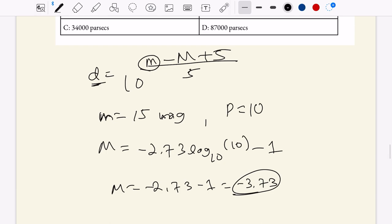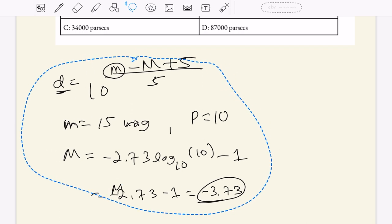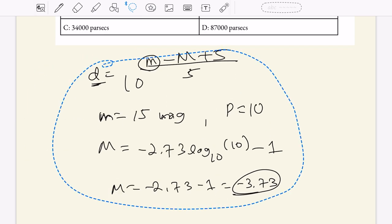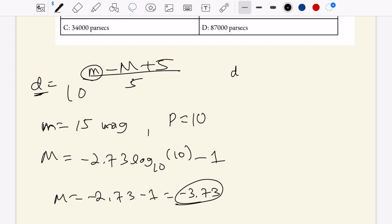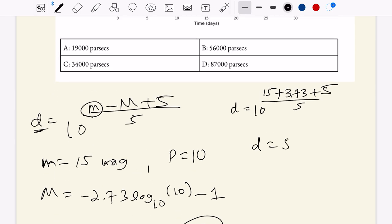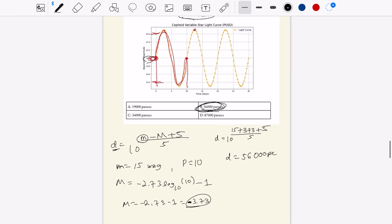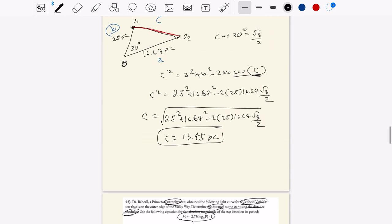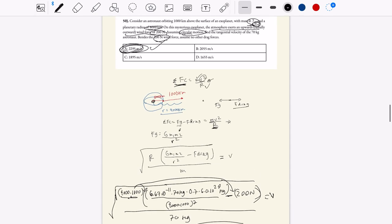So we have all the elements to compute this problem and finish it off. So then we have d equals 10 to the 15 plus 3.73. That's based on the double negative here. And then we're going to add 5 and divide by 5. And so when you do this computation, you'll get that d is about 5,600 parsecs, which is this answer right here. Okay, thank you everyone. That's our astronomy review for today. If you have any questions, please leave it down in the comments below. Otherwise, keep learning.